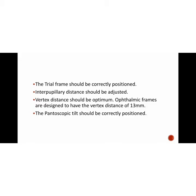Vertex distance should be optimum. Vertex distance is the distance between the front surface of the cornea and the back surface of the lens. In the trial frame, the vertex distance means the distance between the eye and the trial lens. If the vertex distance is too large, it modifies the power — especially in high myopia and high hypermetropia patients.